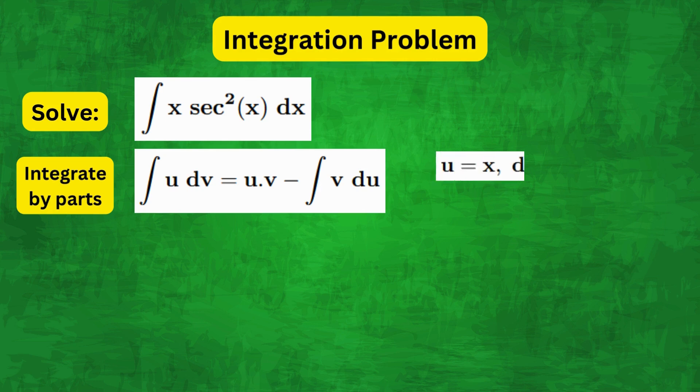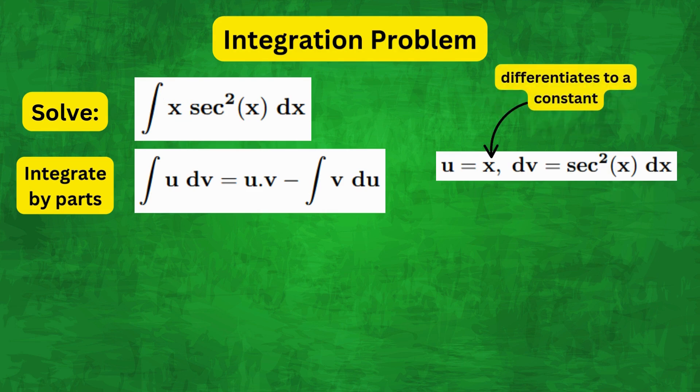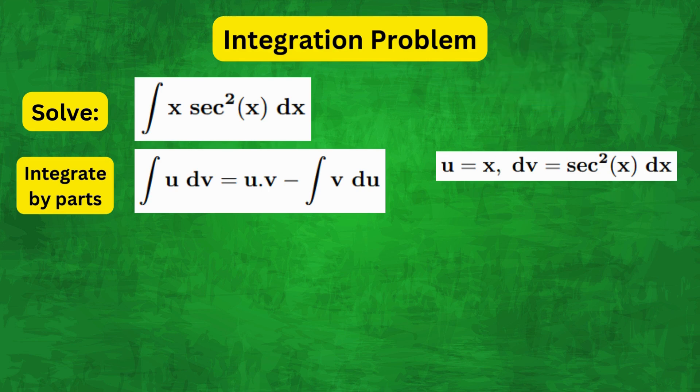Now the next step is to choose u and dv from the question. We will choose u = x as it differentiates down to a constant, which is very important as we shall see later on. And dv = sec²(x) dx as it integrates easily.